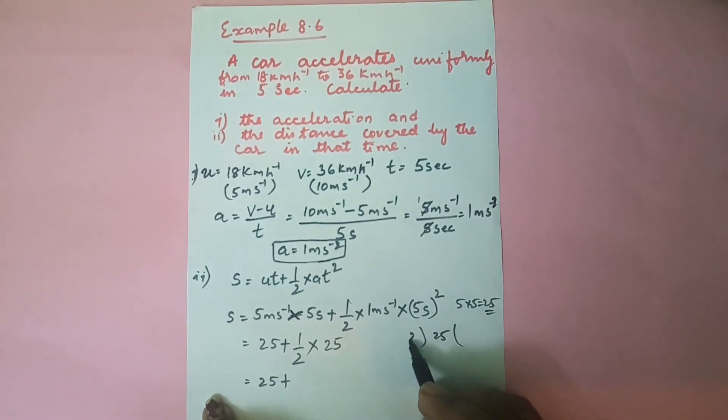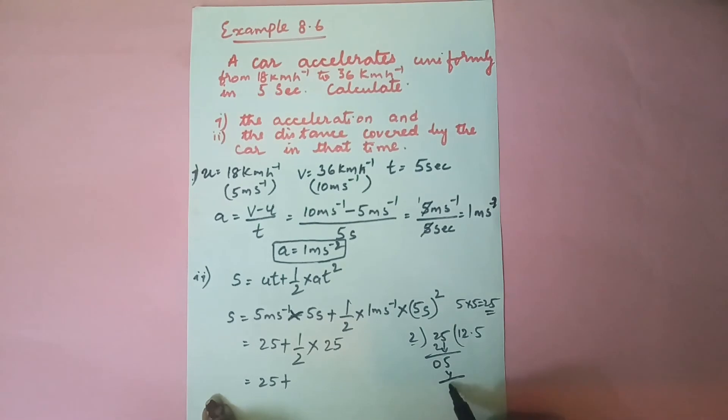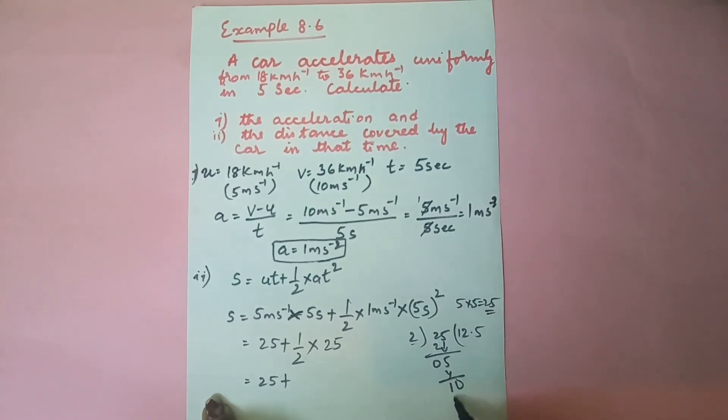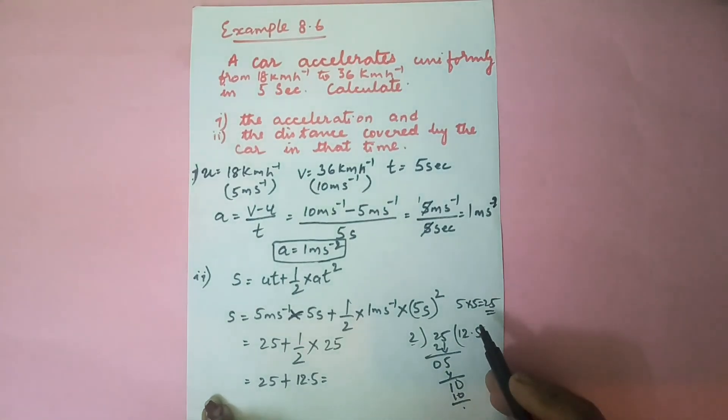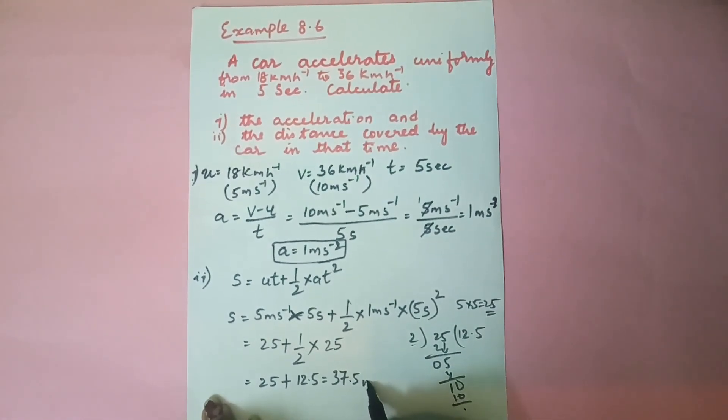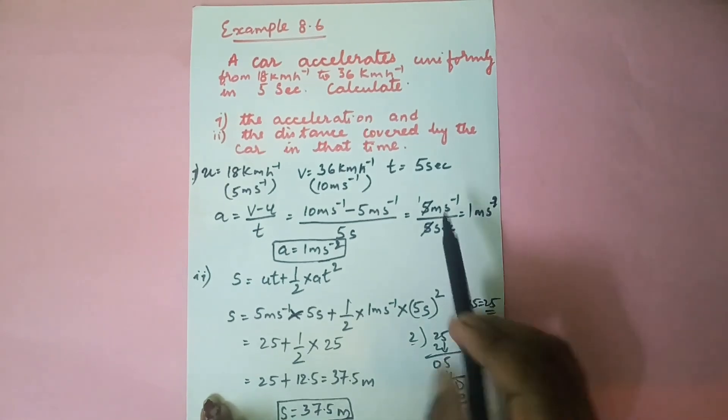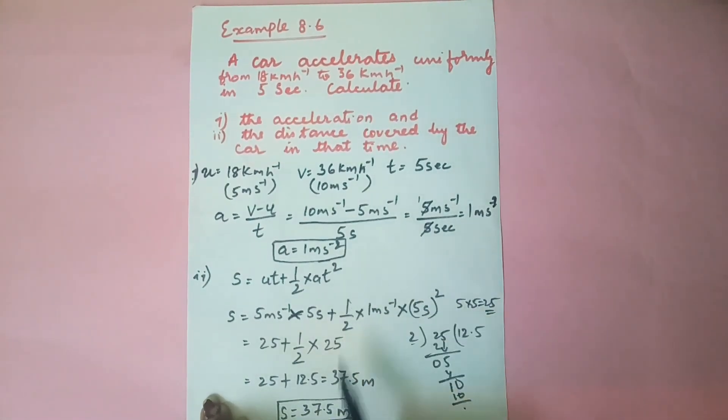When we go for the cross multiplication, when 25 is divided by 2, we get 12.5. So when we add this, that means 25 + 12.5, we get 37.5 meters.